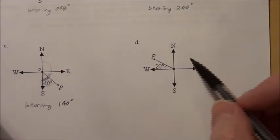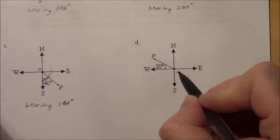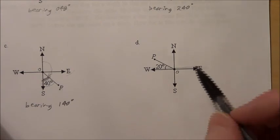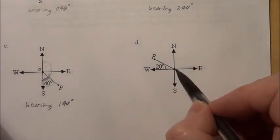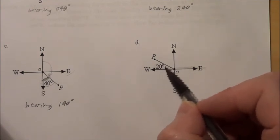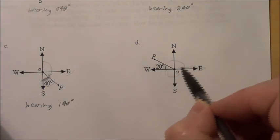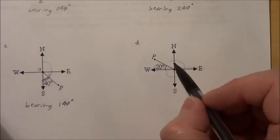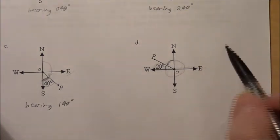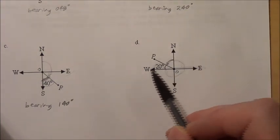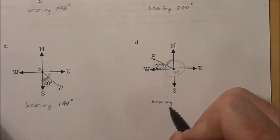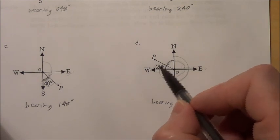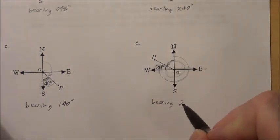In Part D, point P is in the northern part, to the north of the east-west line. We know this angle is 20 degrees, and each angle between the principal cardinal directions is 90 degrees, so the remaining angle is 70 degrees. The cardinal direction is north 70 degrees west. For the bearing, we go clockwise past 90, past 180, past 270, and then 20 degrees past 270, giving a bearing of 290 degrees.